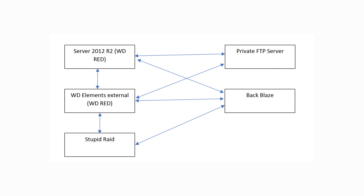Taking a 30,000-foot look back at my storage setup: it can be broken up into a layered solution. The stupid RAID array is at the bottom as ingest — where everything goes to get used. Then it gets backed up to the mass storage on the desktop PC, then backed up to the server, and then everything is backed up to Backblaze and a personal FTP site. That kind of diagram is what you're looking at right now.